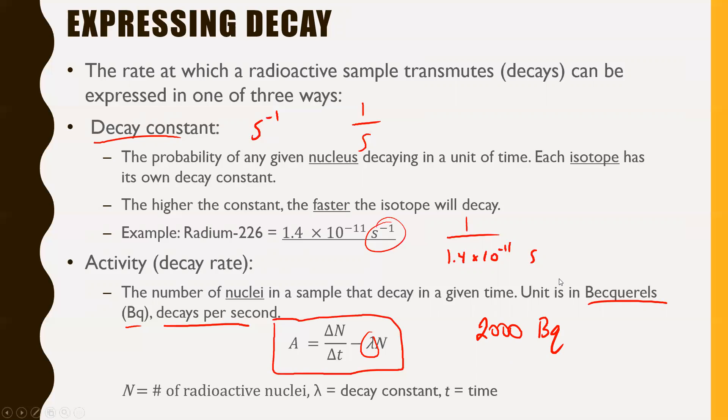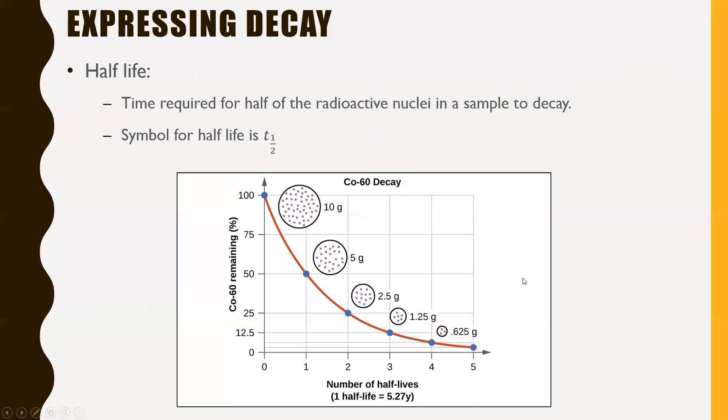Now those two are all well and good, but in terms of the discussions we're going to be having, we're more likely to use one called half-life. Half-life is just the time required for half of the radioactive nuclei in a sample to decay. So if you had a half-life of 10 days, that would mean after 10 days, you only have half of your sample of radioactive nuclei left over. Here's an example. This is for cobalt-60. Let's suppose you started with 10 grams. So we had 100% of your cobalt initially, and the half-life of cobalt-60 is 5.27 years.